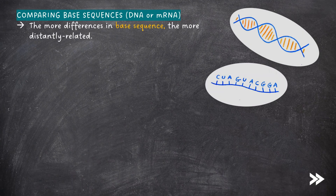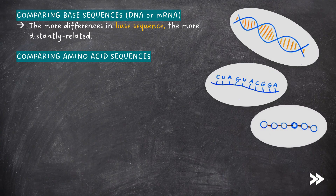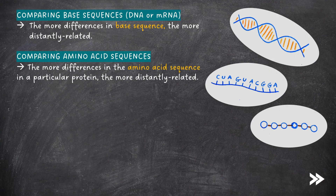For example, when comparing base sequences in DNA or mRNA, the more differences in the base sequence, the more distantly related. When comparing amino acid sequences in proteins, the more differences in the amino acid sequence of a particular protein, the more distantly related. For instance, you could analyse a protein in a human cell and compare it to the same type of protein found in cells of a giraffe to give an indication of how closely related we are to giraffes. The more differences in the amino acid sequence of this protein between the two species, the more distantly related.